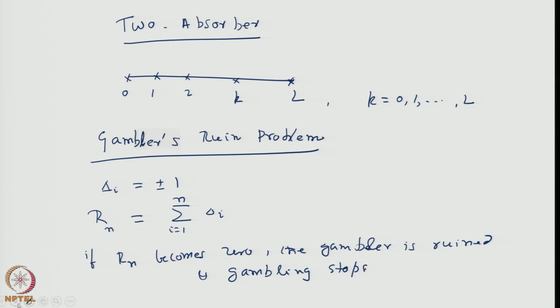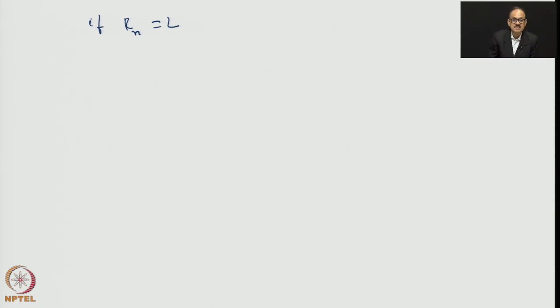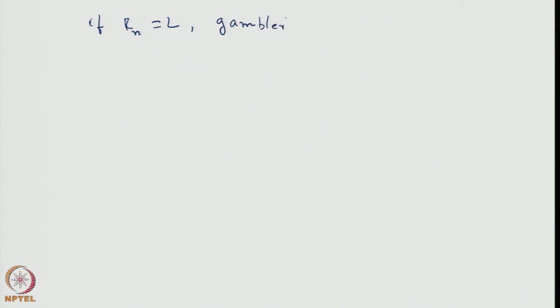On the other hand, if R_n becomes L — some preset amount, say 100 dollars — the gambler quits the game. It is not necessary that he starts with 1 dollar; he can start from any k dollars, but each win or loss is 1 dollar, so we can always change the unit to keep it 1 dollar.